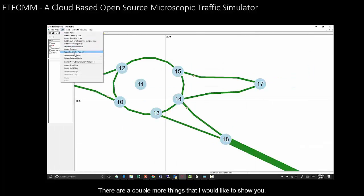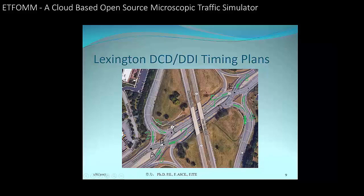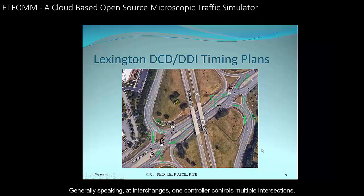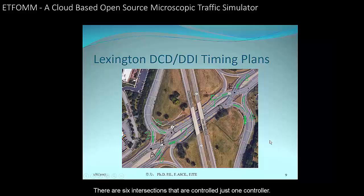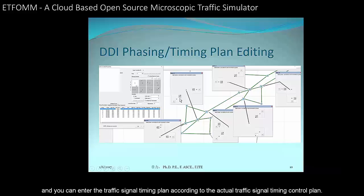Another feature to highlight is that the editor enables you to perform any interchange analysis. Generally speaking, at interchanges, one controller controls multiple intersections. For example, this is a diverging diamond interchange in Lexington where six intersections are controlled by just one controller. The software has a function that combines all those nodes into one screen so you can enter the traffic signal timing plan according to the local actual signal timing control plan.